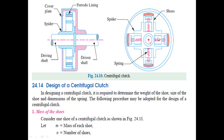When the centrifugal force is less than the spring force, there will be no power transmission. The friction lining used is a parodal lining. The cover plate, spider arms, and casing are the main structural components of the centrifugal clutch.